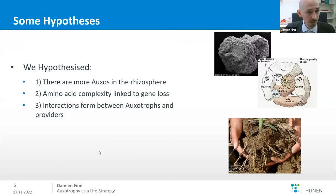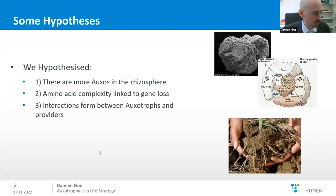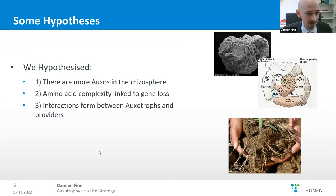For this work, we tested three specific hypotheses: first, that there would be more auxotrophs in the rhizosphere than in bulk soil; second, that the biosynthetic complexity of an amino acid would be linked to gene loss — the more genes required to produce an amino acid, the more likely some will be lost over time; and third, that auxotrophs in these communities must make friends with providers, otherwise they couldn't exist there in the first place.